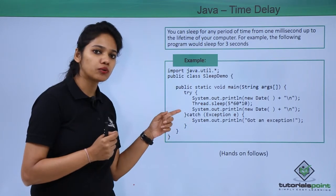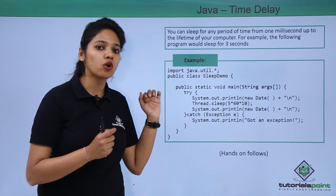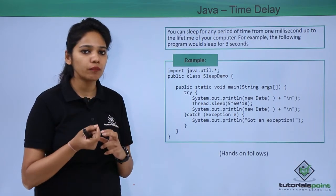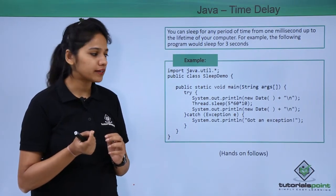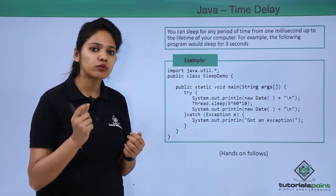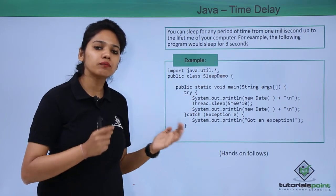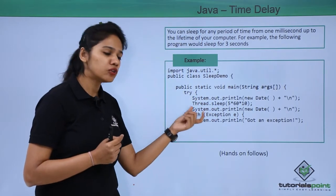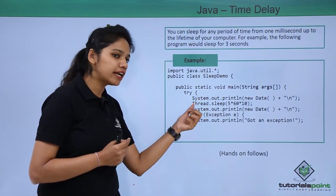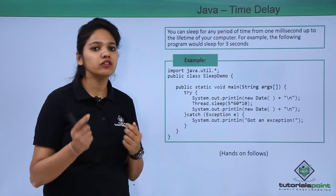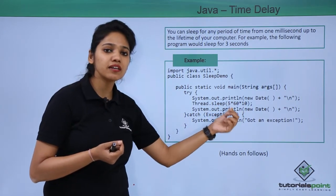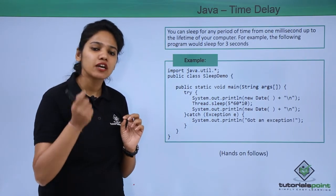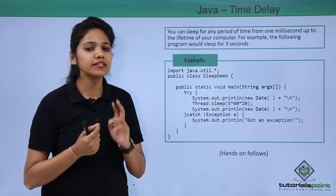One important thing to notice is that we have called a sleep method which says: please make your program sleep for a number of milliseconds. One thousand milliseconds is equal to one second. Our program says we want the program to sleep for three seconds. So how do you make your program sleep? You call a sleep method from the Thread class — you write Thread.sleep() and in the brackets you provide your value in milliseconds. This sleep method takes parameters in milliseconds only, not in minutes or seconds.